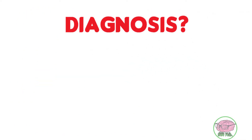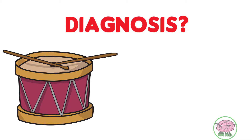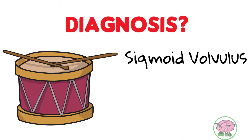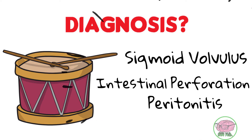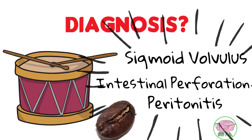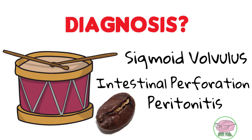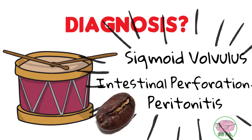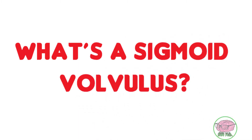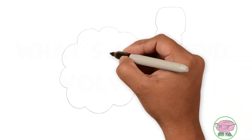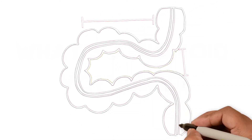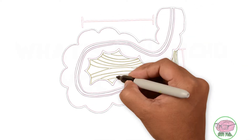So what is the diagnosis? It is sigmoid volvulus with intestinal perforation and peritonitis. The coffee bean sign is specific for sigmoid volvulus. Sigmoid volvulus is a disease that occurs in patients with a specific sigmoid anatomy — in these patients, the sigmoid is long and redundant.